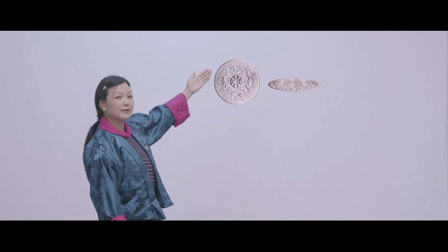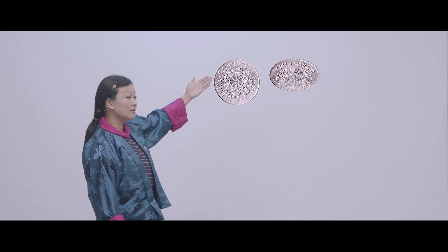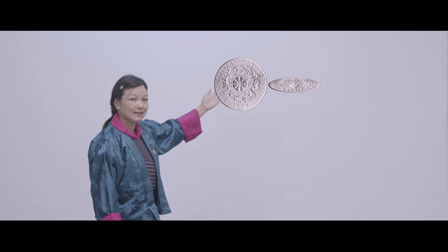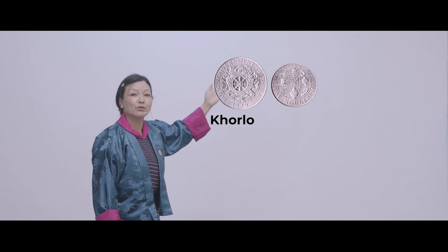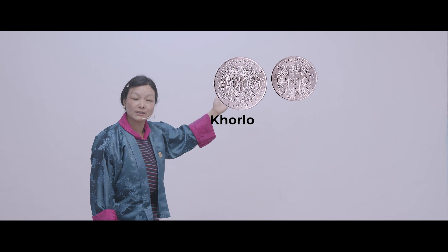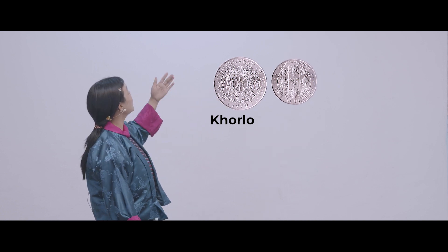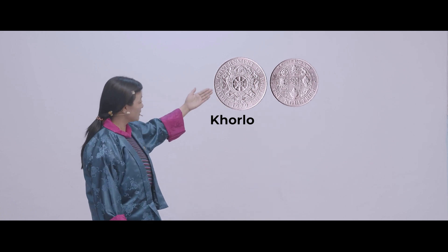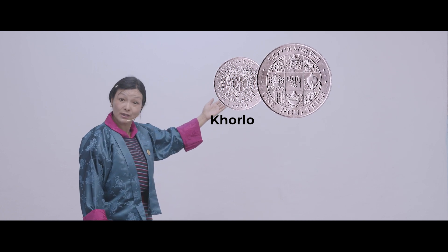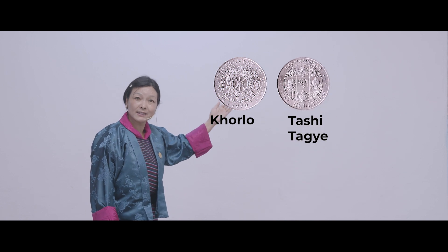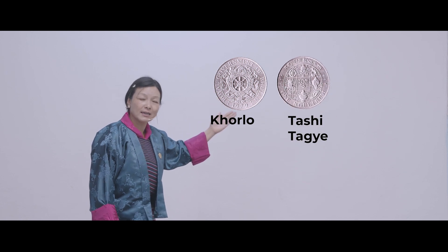Now can we look at one side of the coin? What do we call this? We call it khorlo. And another side — what do we call it? It is tashy dhage.